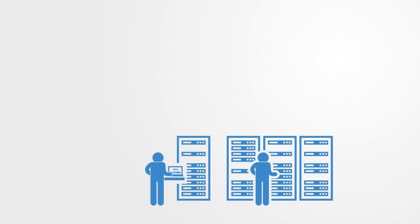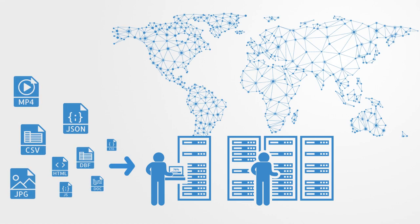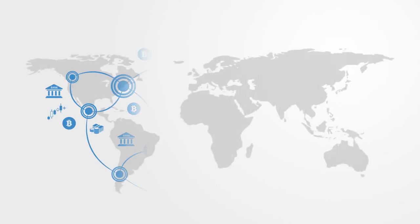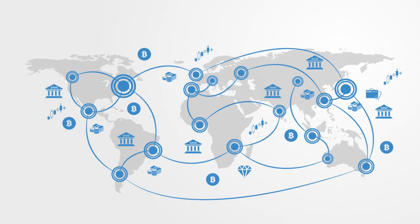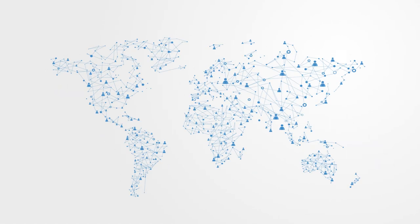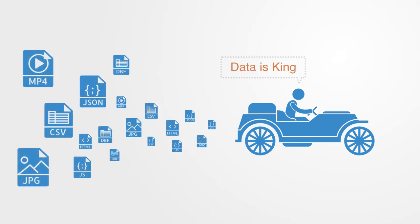With the theory of networks and the availability of new sources of data, we are starting to get a real picture of what some of these complex systems that make up our world actually look like. We can start to see the connections within financial systems through which contagion spreads, the real-time movement of freight around the globe, or socio-political networks that influence our lives. This is a new kind of science, driven less by models and equations, but more by real-time dense data sets.